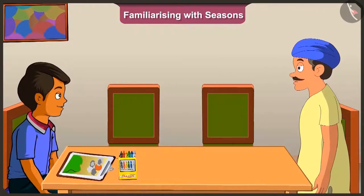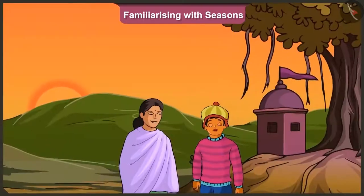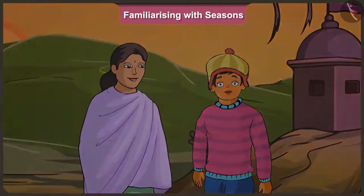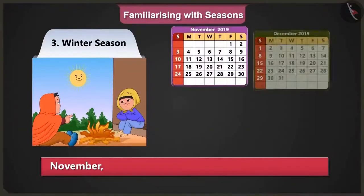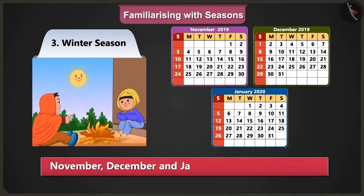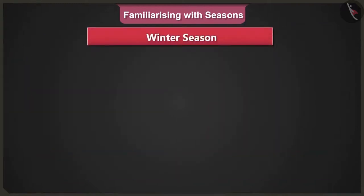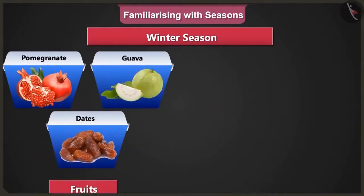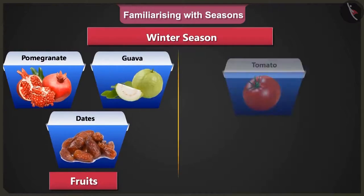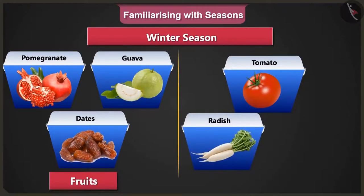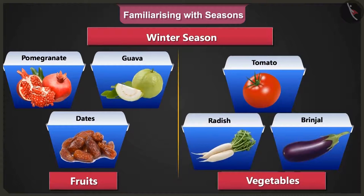After the monsoon season comes the cold season, means winter. To protect me from cold, mother makes me wear woolen clothes. November, December, January are the months of winter. In these months, pomegranate, guava, and dates are the fruits. And tomato, radish, and brinjal are the vegetables.